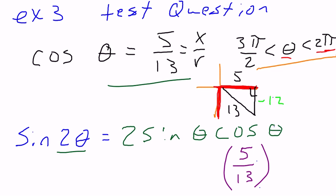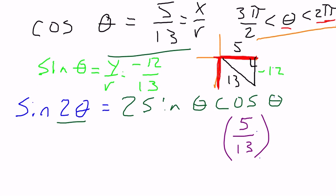So now we can find our sine value. Sine is y over r. So sine of theta is going to be y over r. Y is negative 12, r is 13. So we can substitute that in, negative 12 thirteenths, times 2.